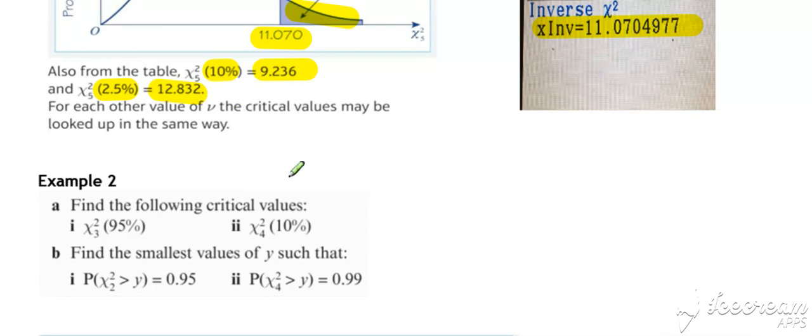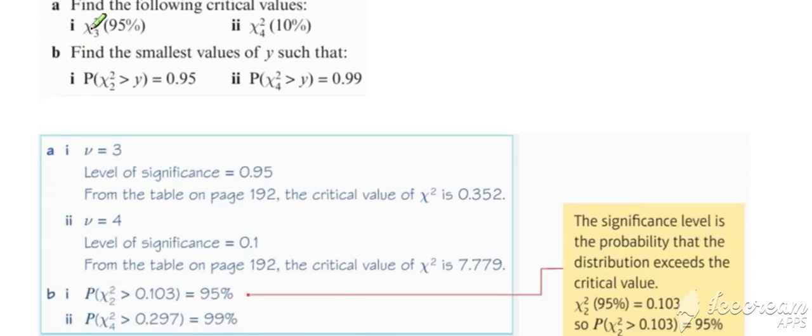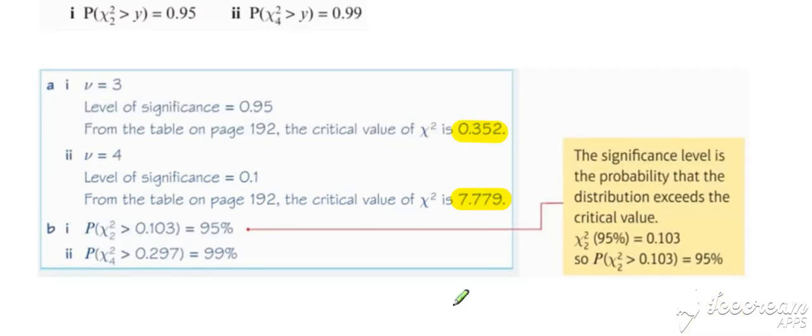A bit more practice in example two. For chi-squared 3 at 95% significance level, from the table you can pick off the value of 0.352. If it's chi-squared 4 at 10%, then from the tables, 7.779. Similarly, for part B, it's just phrased in a slightly different way but means the same thing. You can look up from your tables 0.95 and 0.99 for the corresponding values.